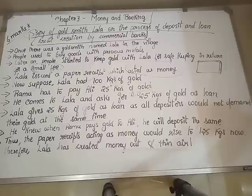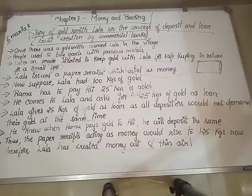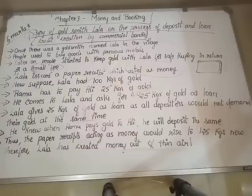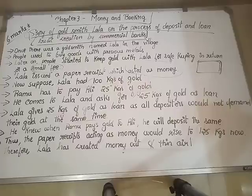I hope the story is understood. Now why are we studying this story? This is for you to understand the working of commercial banks. This is how credit creation is done by commercial banks. Just like there was a goldsmith Lala and people kept their gold with him, we keep our savings — the money left after spending our income — in the bank, because it is safe there. The same way, like the villagers kept their gold with Lala, we are keeping our money with the banks.